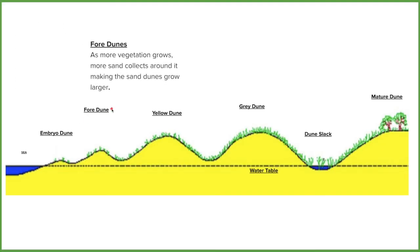We then have foredunes. We're going to see a bit more of this pioneer — the spiky grass — developing, which means that more sand starts to collect around it. So the dune is going to start to develop in height. As more vegetation comes in and starts to die, it puts nutrients into the soil, which makes it more desirable to the less hardy plants.